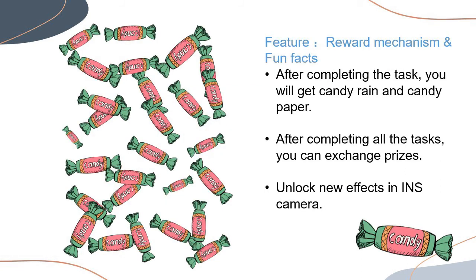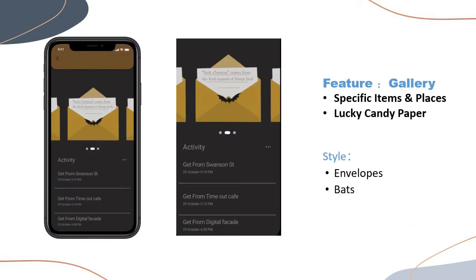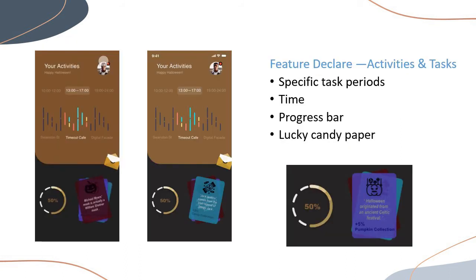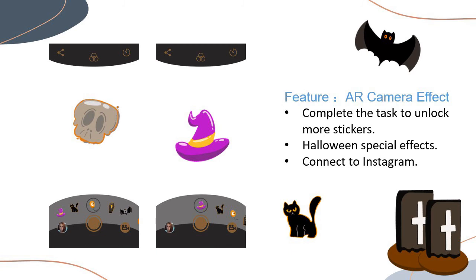The candy rings and fun facts come from the fifth feature — reward mechanism and fun facts. When the user completes a task, they will receive a reward of a candy from the candy ring, and the candy wrapper will be marked with a fun fact. After finishing all tasks, the prize can be exchanged. Users will also unlock some Halloween limited stickers in the camera function. The gallery is clearly visible, where users can view all the candy wrappers acquired and where they were collected. Swiping down the page allows the user to see more details such as the time guide, the progress of completion, and a flip page through the lucky candy paper.